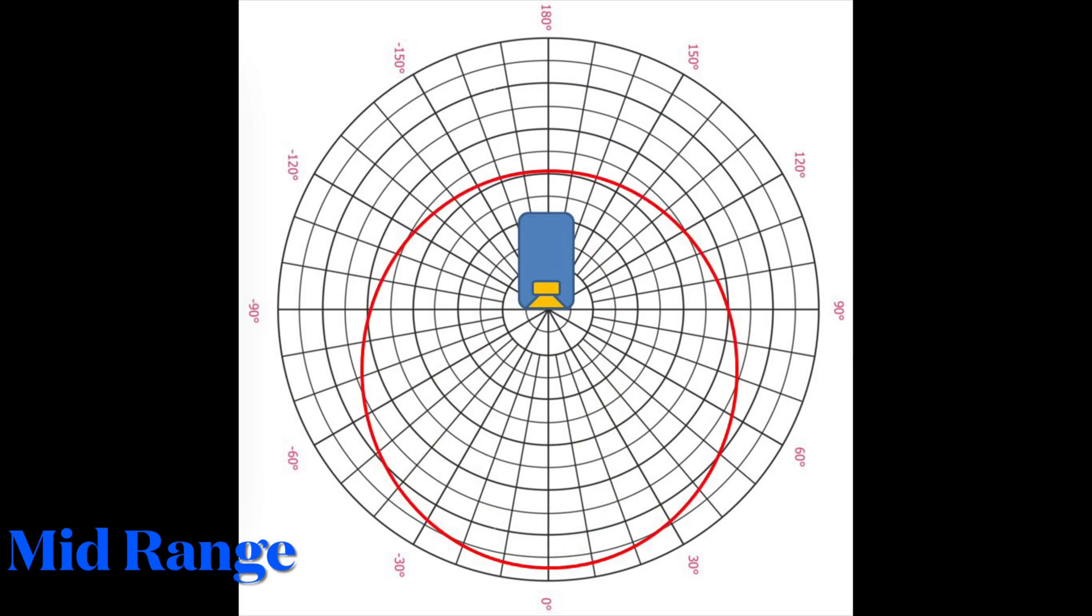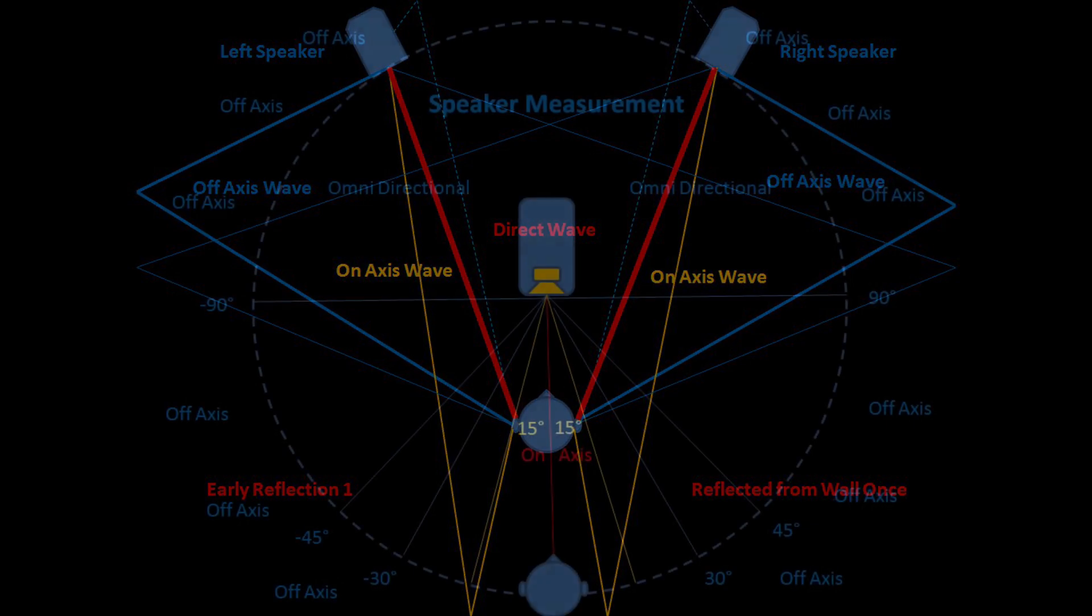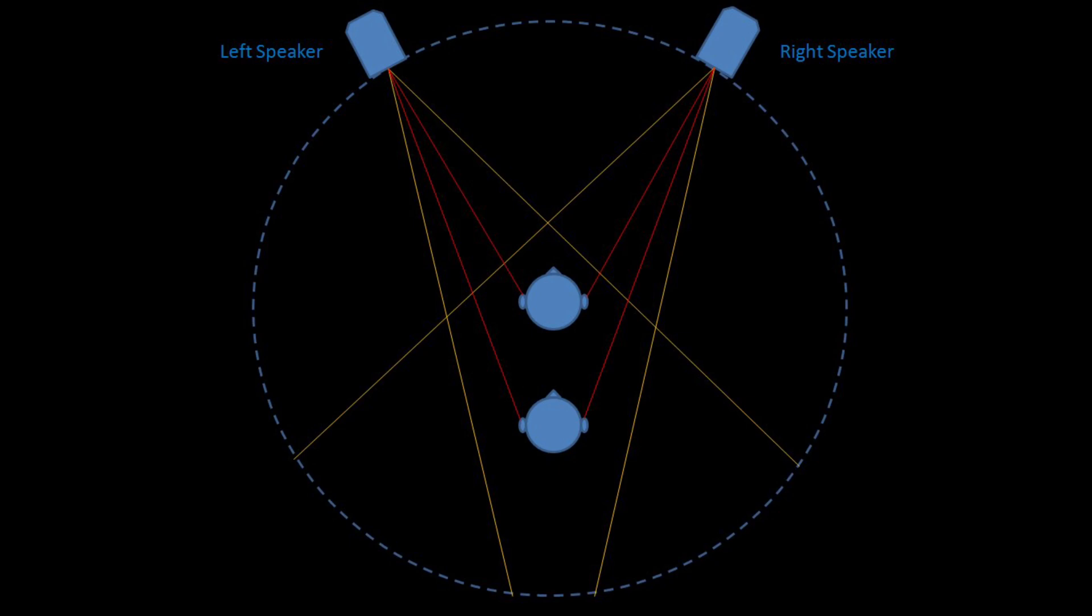Now since the treble is normally having narrower directivity or dispersion, so depending on your room acoustics and the speaker directivity patterns, you might want to play around your speaker's toe-in angles to optimize the sound.